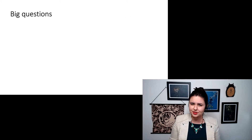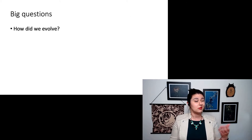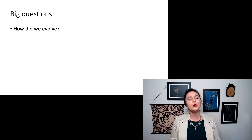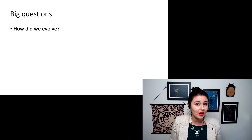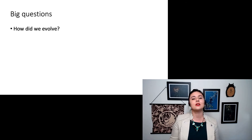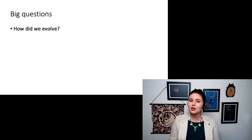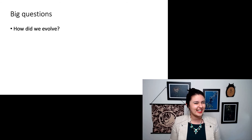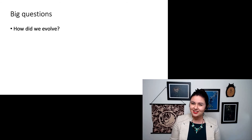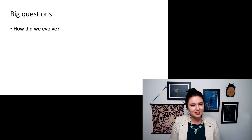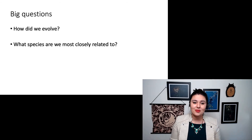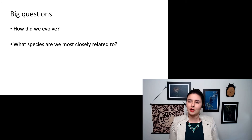There are a couple of big questions in this field. The main one is: how did we evolve? We will be talking about evolutionary theory to understand the theory behind that, and then we'll look specifically at the human fossil record to have an idea of what the best answer is right now. With the fossil record, we're constantly discovering new fossils, so our answers constantly change. We'll also be talking about the species we are most closely related to and what that means.